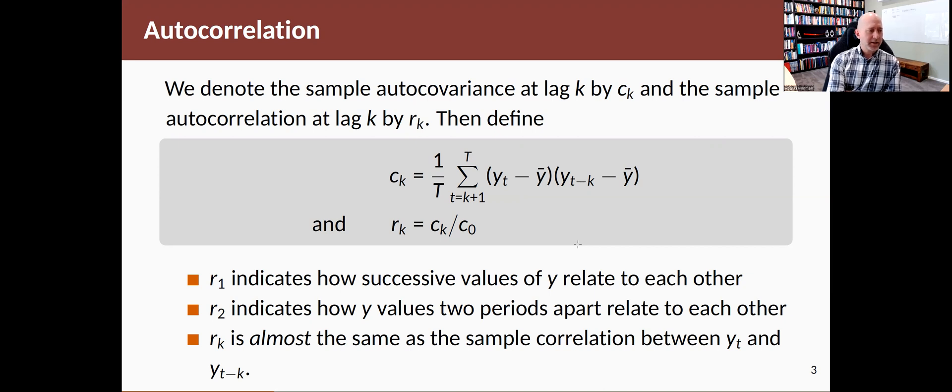So R1 indicates how successive values of Y relate to each other, R2 indicates how Y values two periods apart relate to each other, and as K increases, you've got how Y relates K periods apart.